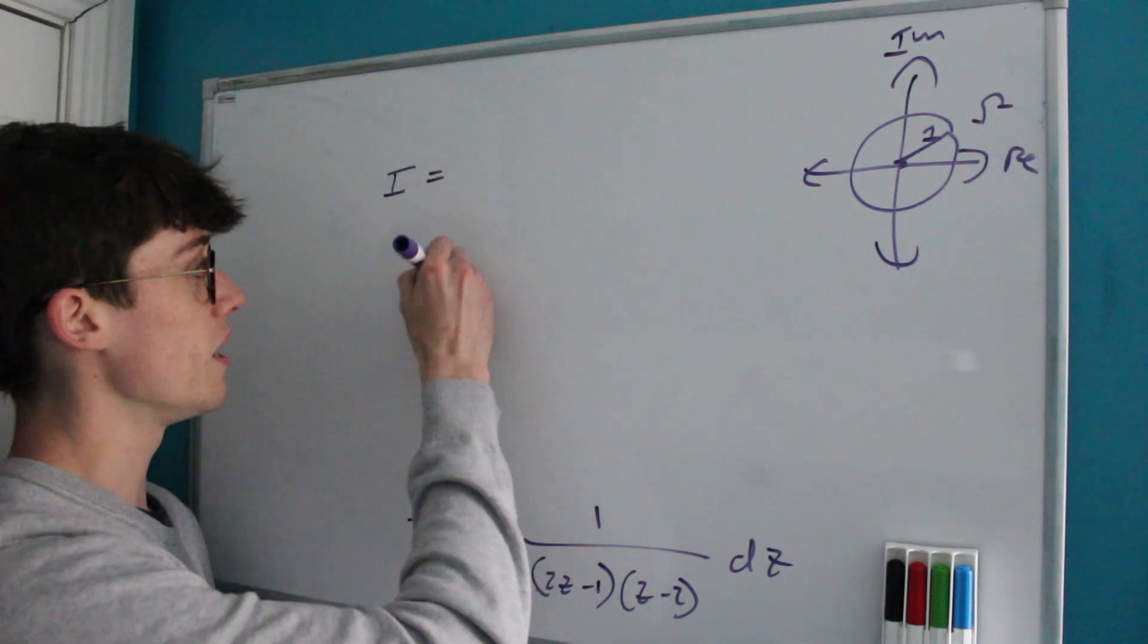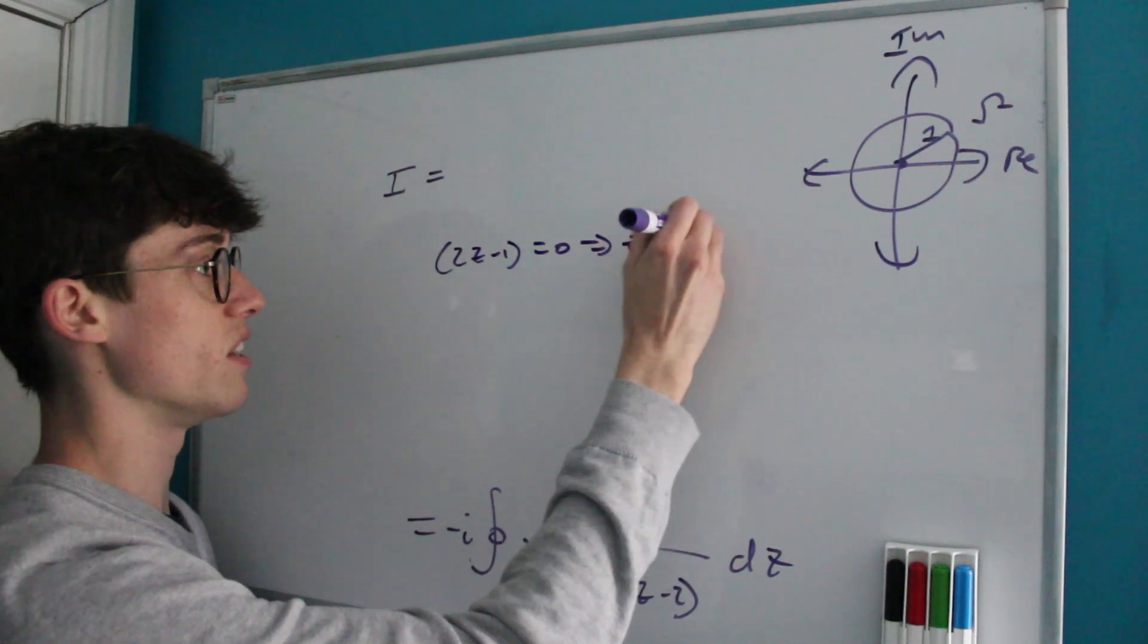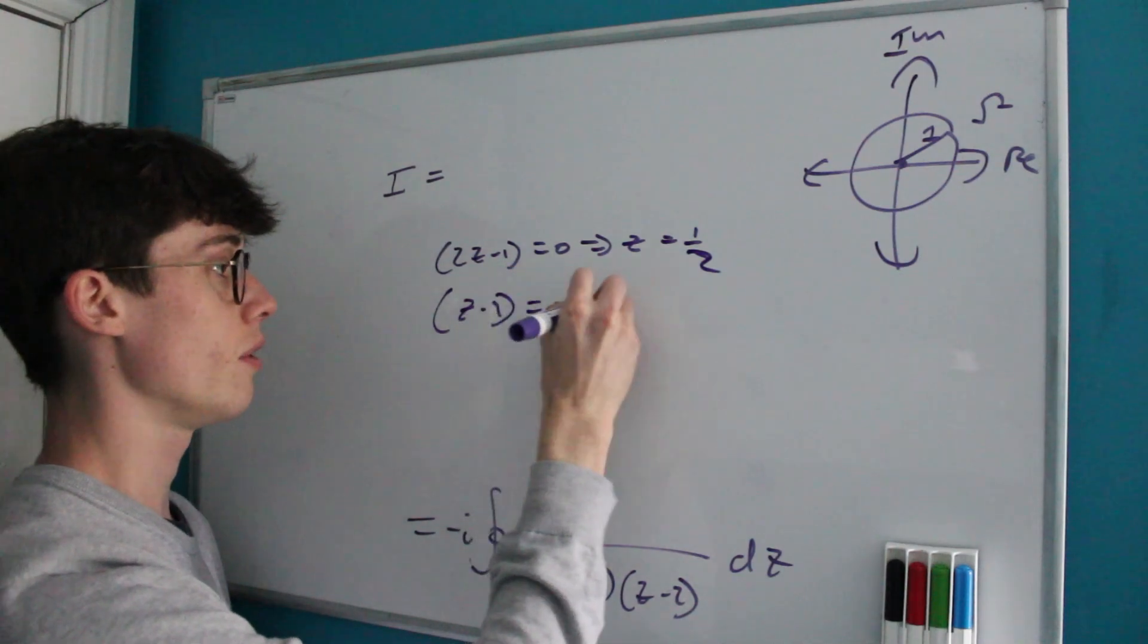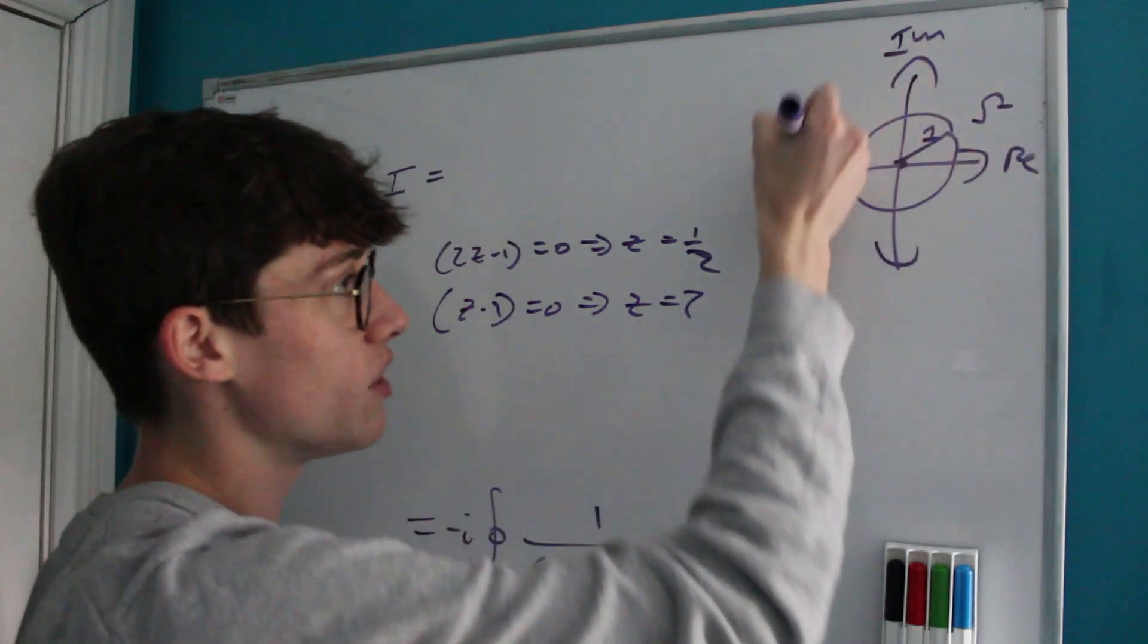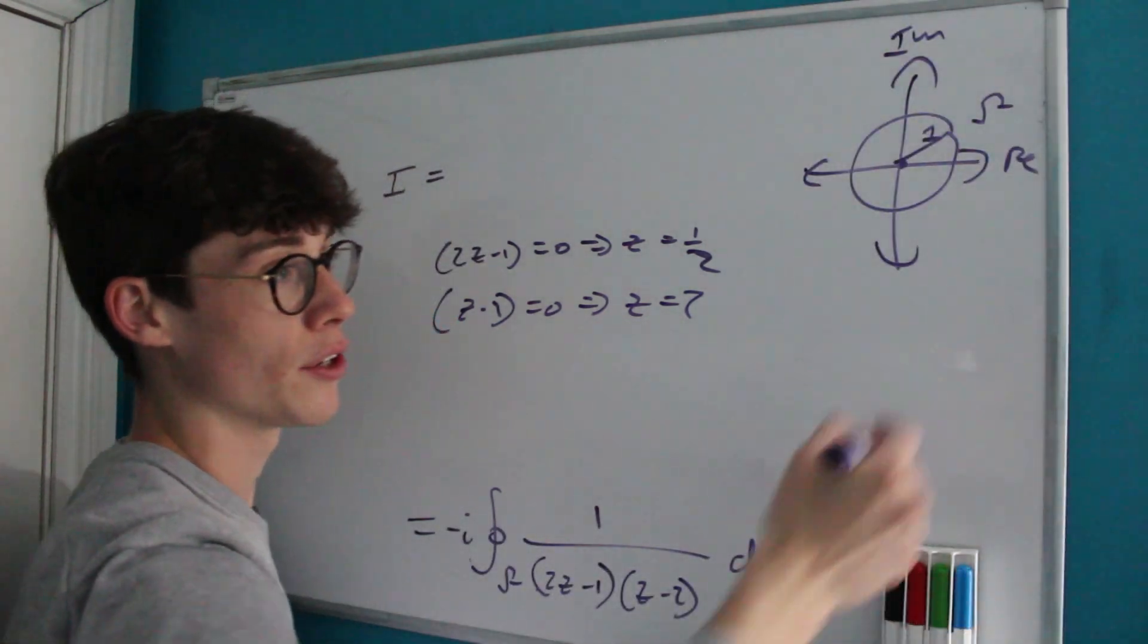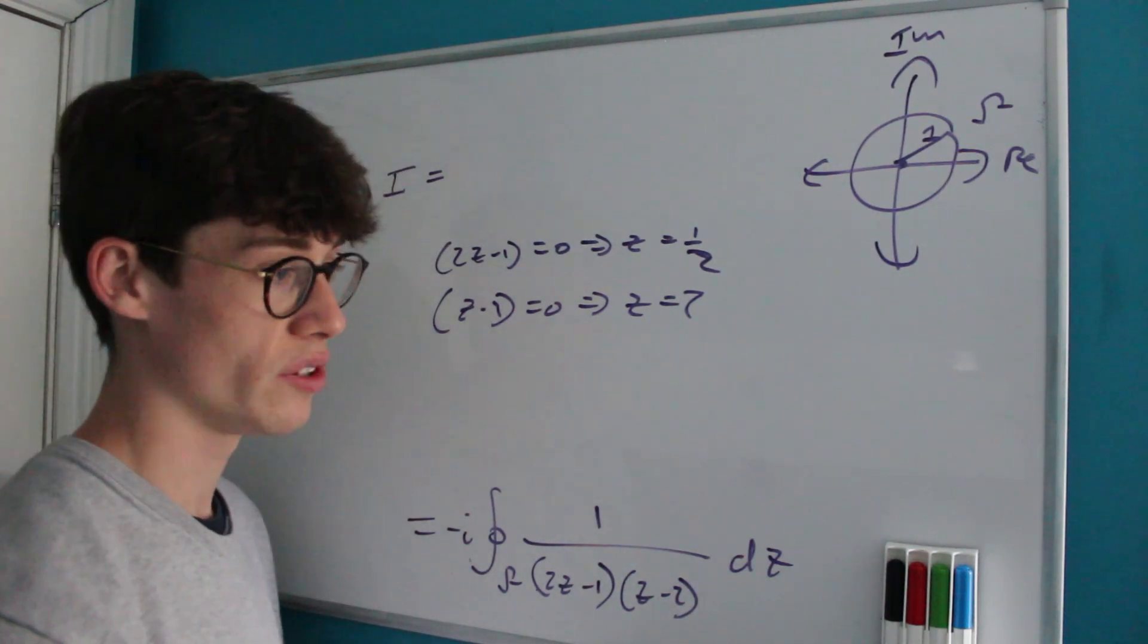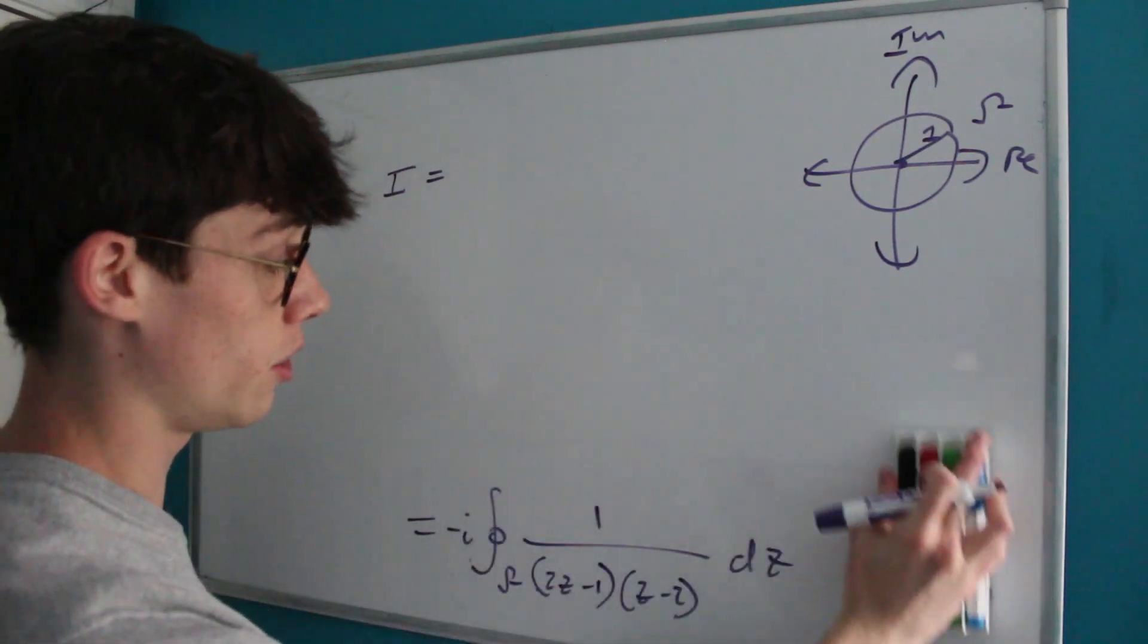And now that we've factorised our integral, we can now see where are our poles? Where are the points that this function becomes undefined and blows up to infinity? Well, there's going to be two of them, right? Because there's two factors in the denominator here. The first one is when 2z minus 1 equals 0, which of course means that z is a half. And the second one is when z minus 2 equals 0, which is when z is equal to 2. However, within our unit circle, 2 is going to be outside of our contour. And so we don't need to worry about it. We're only considering the poles within the contour. And the only one of them is going to be at a half.